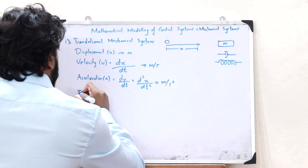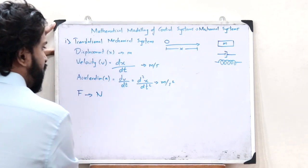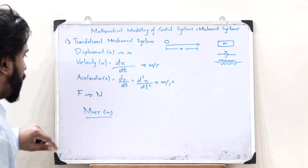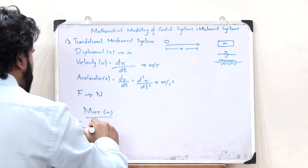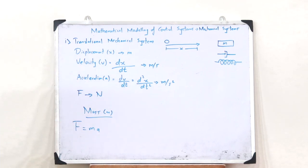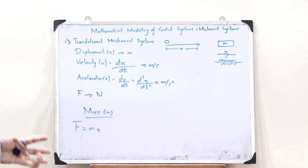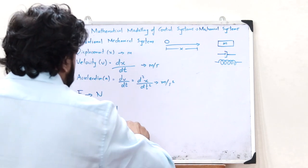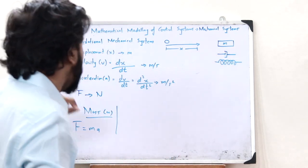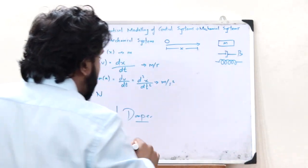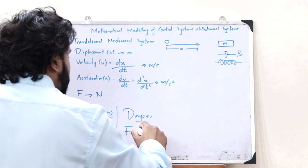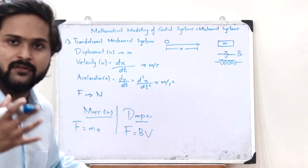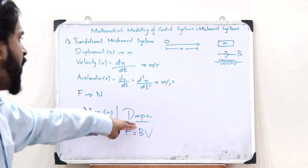Force F has the unit of Newton. If we are considering a particular mass M, then the force acting on that mass is given as F = MA — basic physics. Next, if we are considering a particular damper with damping coefficient B, then the force is given as F = Bv, where v is the velocity with which the damper is displaced.